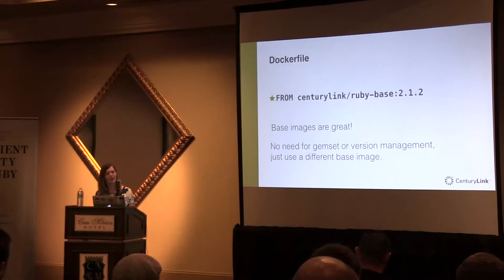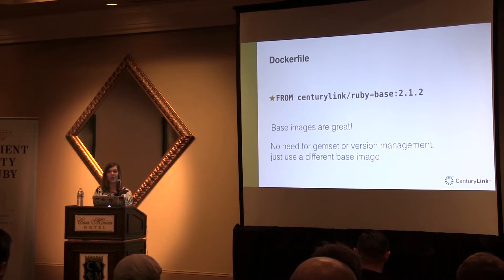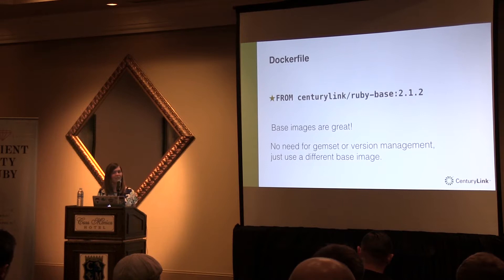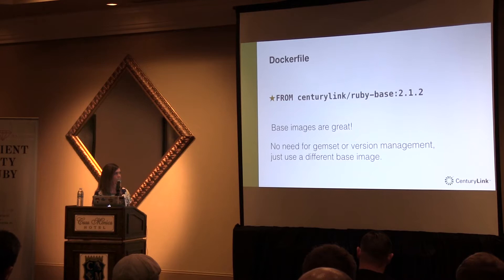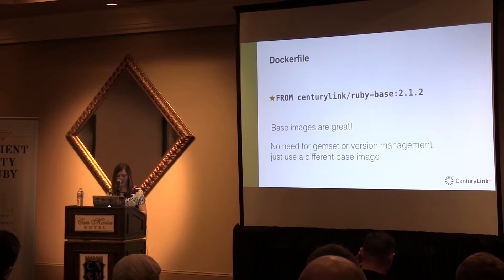I want to revisit the FROM command — it has a gold star. There is no need for gem management or version management inside of a container because you just put whatever you want inside it. If you want Ruby 2.1.2, you make that your base image. If you want to change versions, you don't have to futz around with version management — just change your Dockerfile, rebuild it, and it will just be there. I find myself having different containers for whatever gem set I'm using instead of using RVM or other management tools.